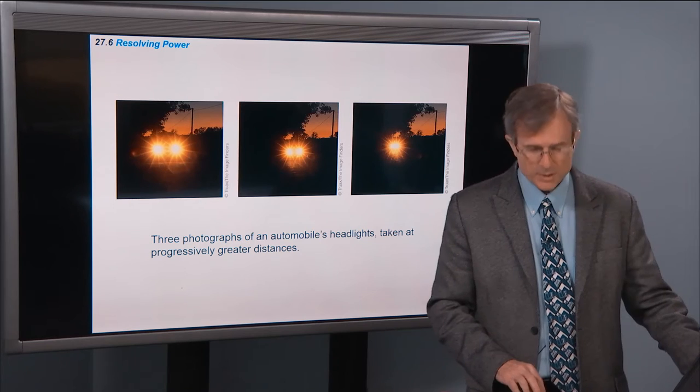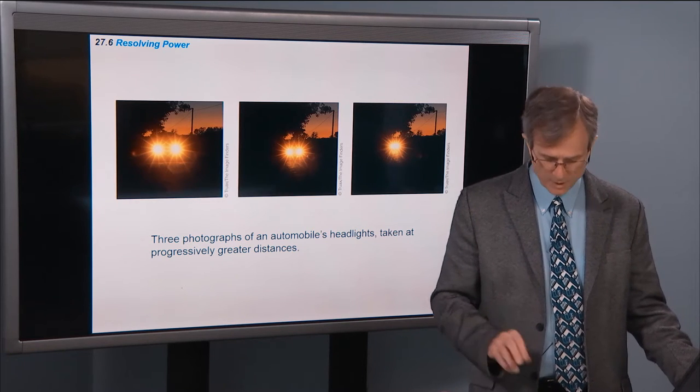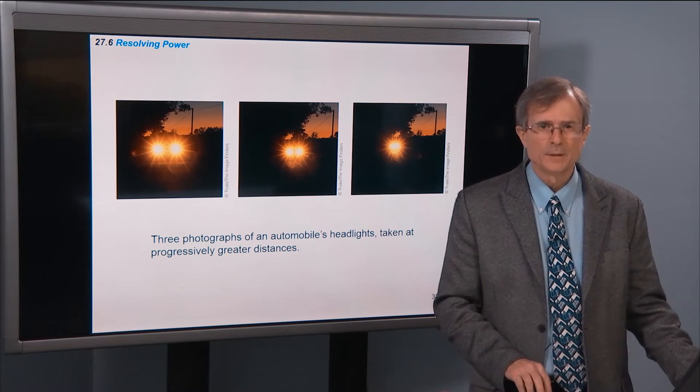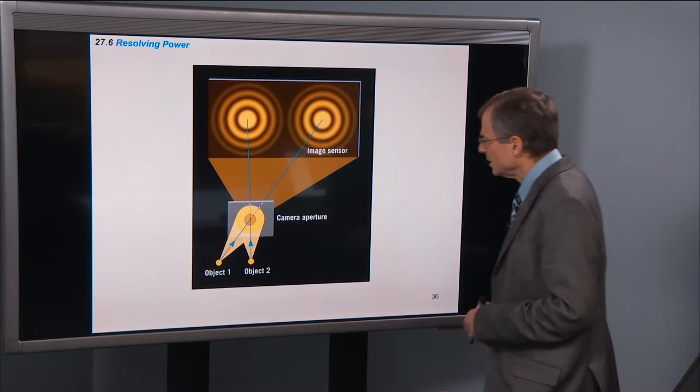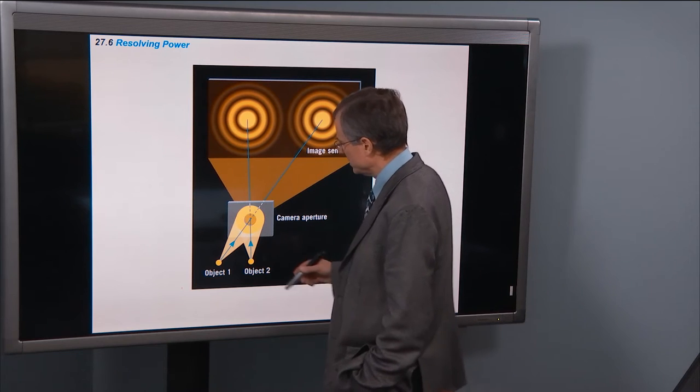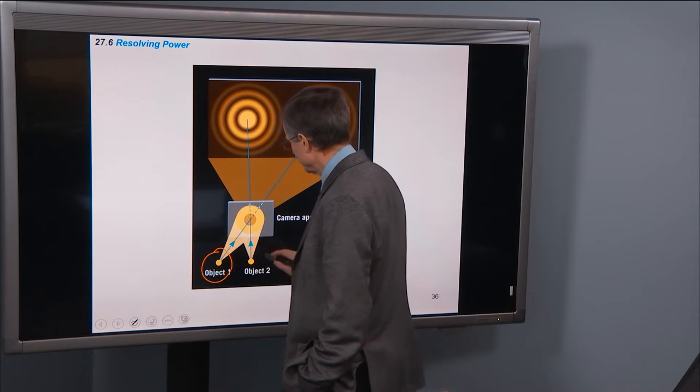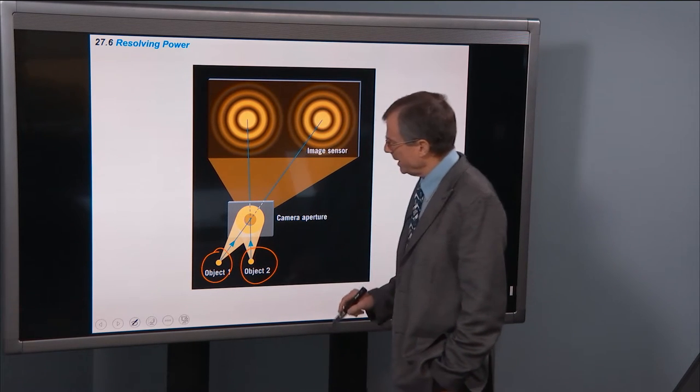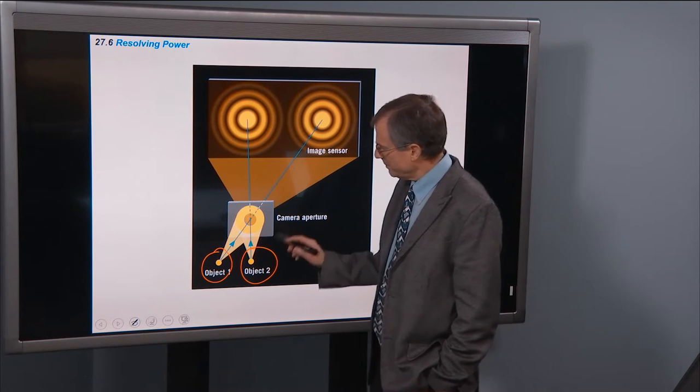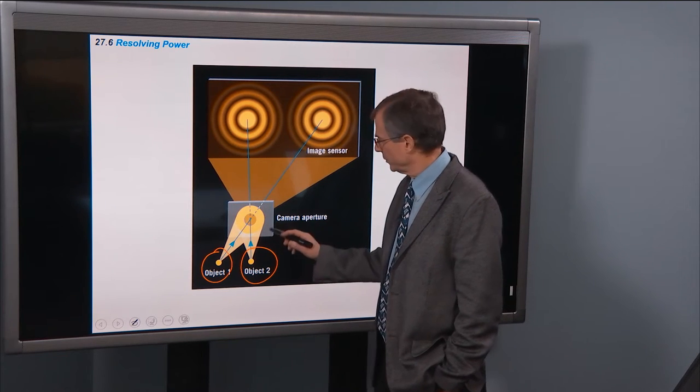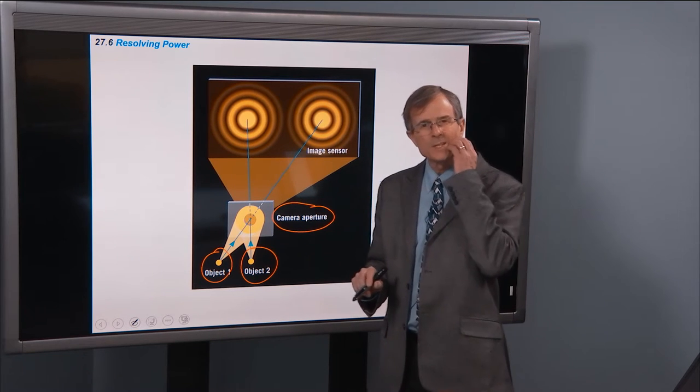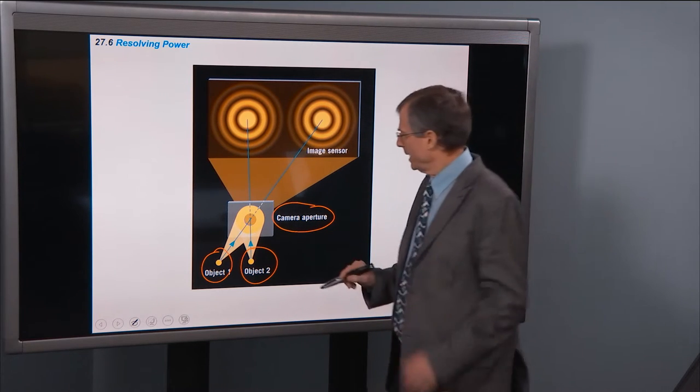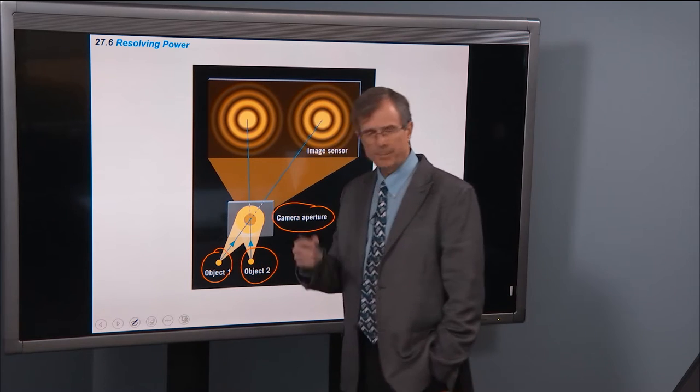And in resolving stars, what matters is what's called the Rayleigh criterion, that we'll introduce here. So you have two objects, say two stars, and you're going to image them through a camera, through some aperture, or a telescope. And this aperture, aperture just means opening.